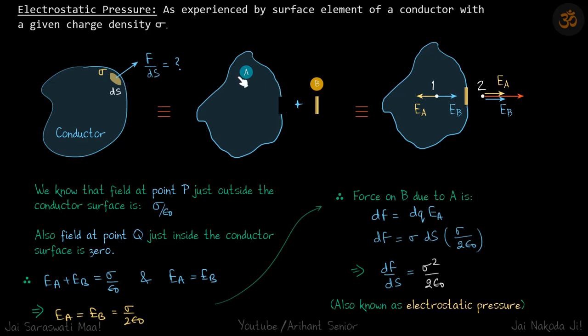First, we remove the element and divide the conductor into two pieces: the surface element itself and the rest of the conductor. Let's call them A and B.